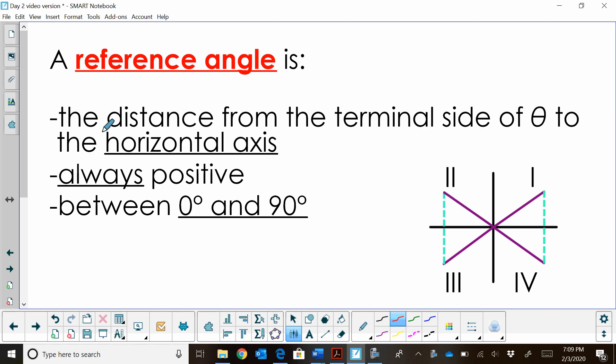So as we're dealing with the unit circle, we use reference angles all the time. A reference angle is the distance of the terminal side of an angle, in this case theta, to the horizontal axis, which is our x-axis.